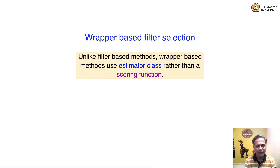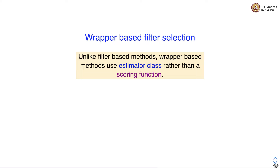Namaste, welcome to the next video of the machine learning practice course. In this video we'll discuss wrapper-based feature selection methods. In the last video we had discussed filter-based methods, which used a scoring function to score different features. In the wrapper-based method, instead of using a scoring function, we use an estimator class to decide the importance of features. Let's look at wrapper-based methods one by one.